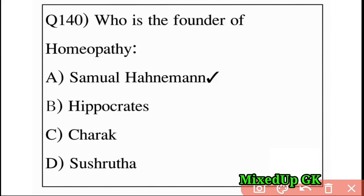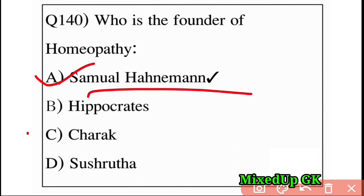Next question: who is the founder of homeopathy? Option A: Samuel Hahnemann, Option B: Hippocrates, Option C: Charak, Option D: Sushruta. The answer is Option A: Samuel Hahnemann.